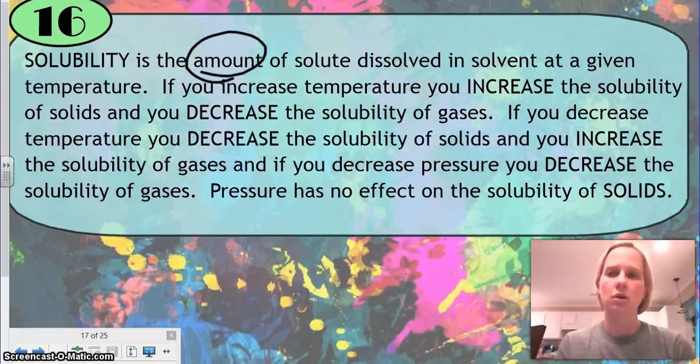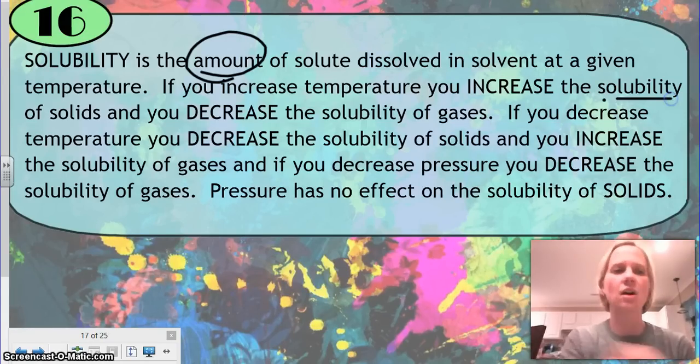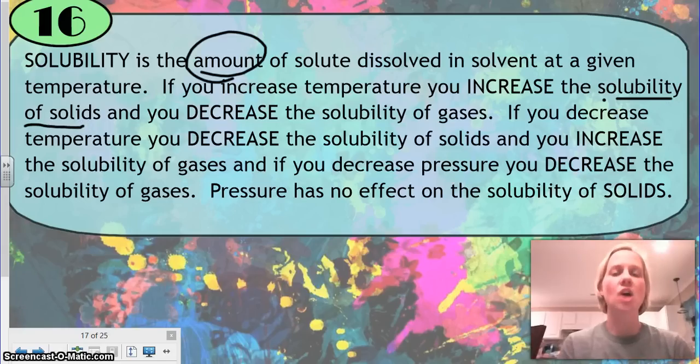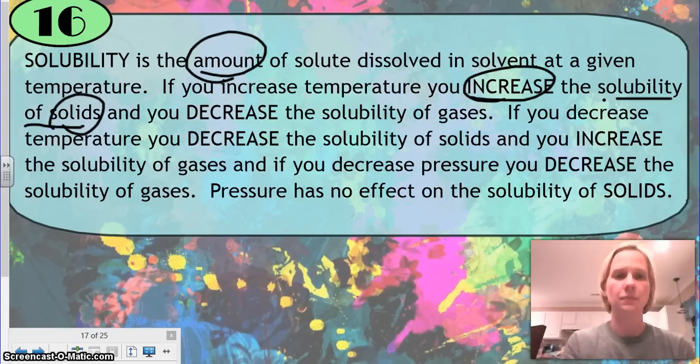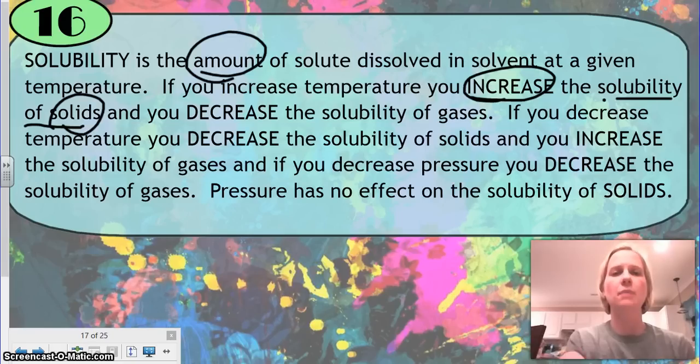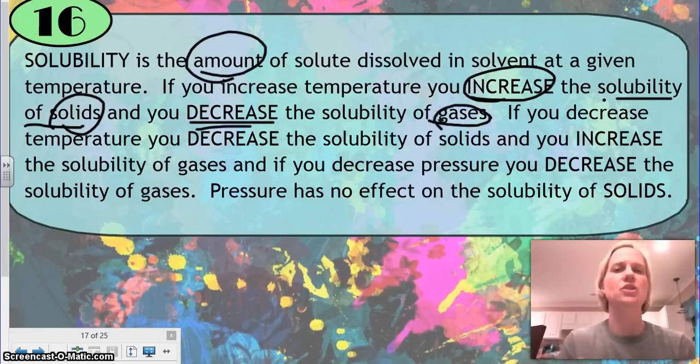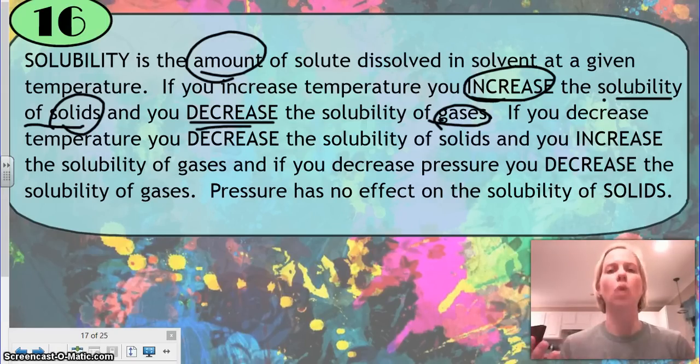If I increase my temperature, I'm going to increase the solubility of solids. So a solid being like sugar. I had that example with sweet tea. If I heat my tea up, so I'm increasing the temperature of my tea, I can put more sugar in it. If I increase my temperature, it actually decreases the ability to dissolve a gas. So if I'm out in the ocean, and the ocean water is really warm, it now has less of an ability to hold oxygen in it.